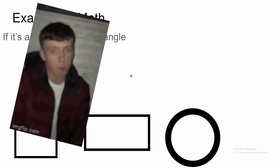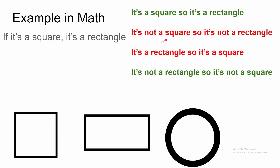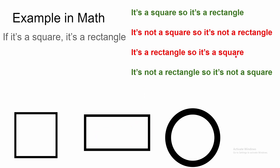Let's take a look at some conclusions. Could you say it's a square, so it's a rectangle? Yes, this is a valid claim — if you know it's a square, then you know it's a rectangle. Could you say it is not a square, so it is not a rectangle? No, this is not valid. Just because it's not a square doesn't mean it's not a rectangle — this is a shape that is not a square but it's still a rectangle. Could you say it's a rectangle, so it's a square? No, also not valid. Just because it's a rectangle doesn't mean it's a square.